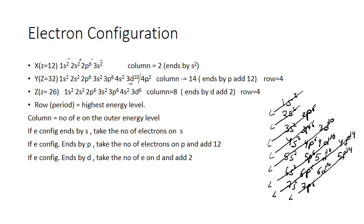For atom Z with atomic number 26, we write: 1s2, 2s2, 2p6, 3s2, 3p6, 4s2 — that accounts for 20 electrons. Since the atomic number is 26, we still have 6 electrons remaining. We place these 6 electrons on sublevel 3d, since d can hold a maximum of 10 electrons, giving 3d6.